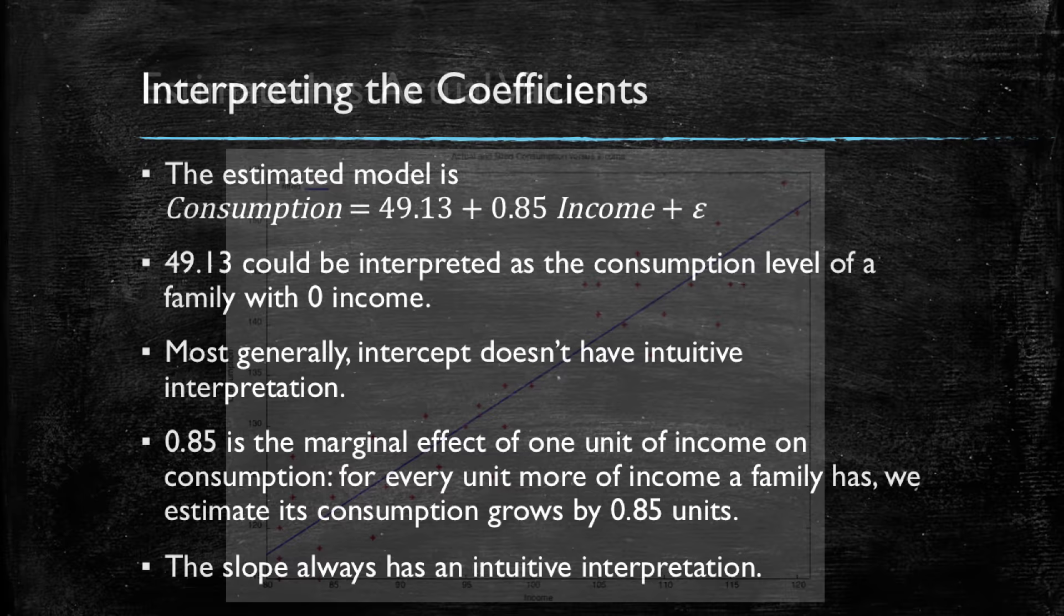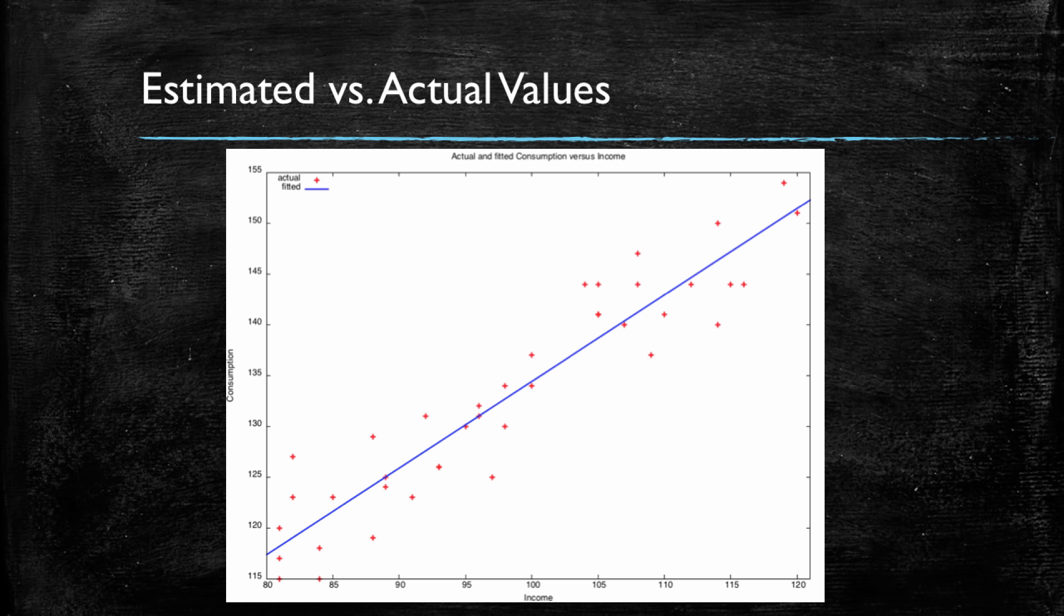And we will finish our example by showing the initial observations and the fitted linear model in the same plot. Here in this plot, the horizontal axis is income and the vertical axis is consumption. The 40 red dots you see represent each of the 40 observations of the families for which we had data on income and consumption.